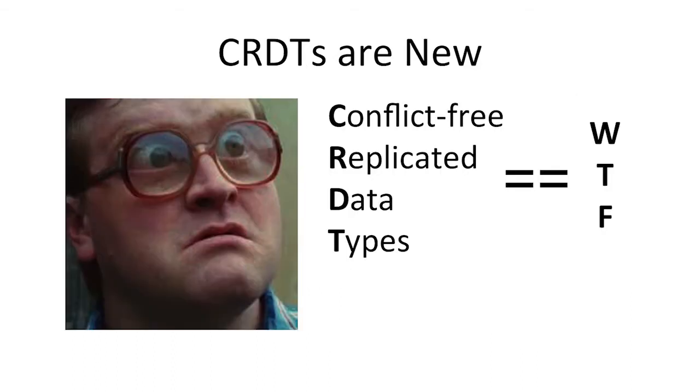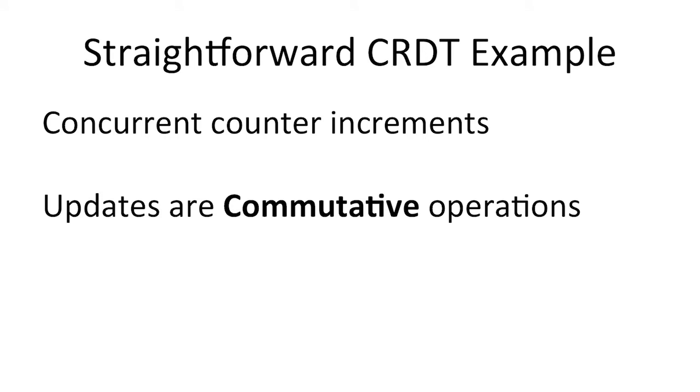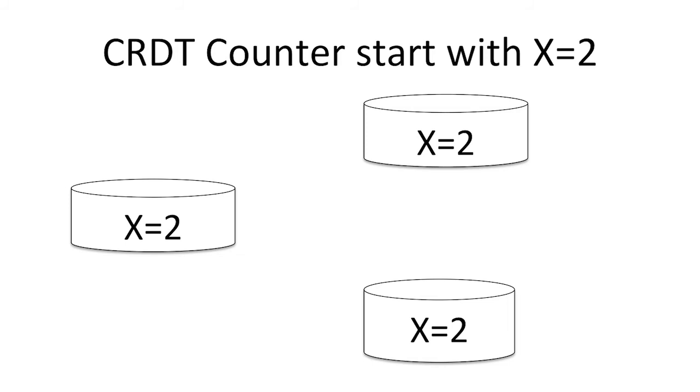Nobody here knows what CRDTs are — they're a new form of technology. The academia for consensus stuff is from the 70s and 80s; the academia for CRDTs is 2011 to now. Here's a very simple example: we're going to have three different actors — just think of them as CDN pops — incrementing counters in parallel. What CRDTs do is represent updates or modifications as commutative operations. Commutative means you can apply them in any order and still arrive at the same final state — which works really well when you have geographic distance between modifying databases.